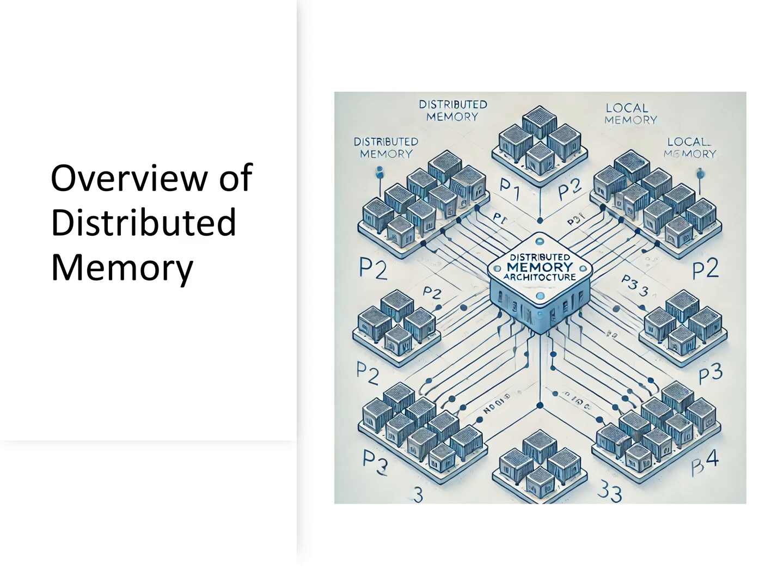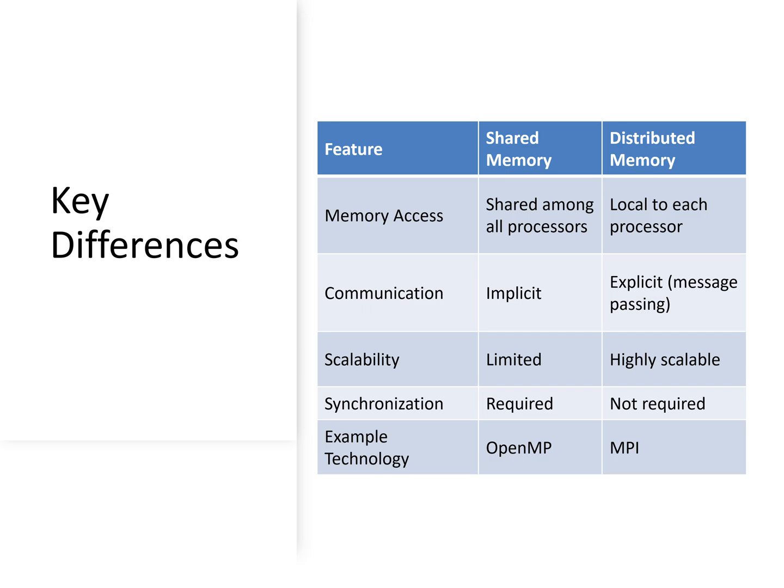This is the architectural diagram of distributed memory. Now here is a comparison of the two systems. In shared memory, all processors share the same memory, so they can directly access and read or write data from this common memory. In distributed memory, processors cannot directly access each other's memory.